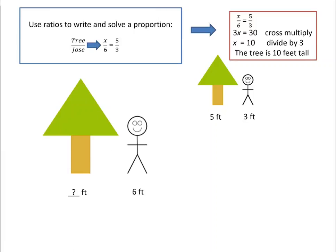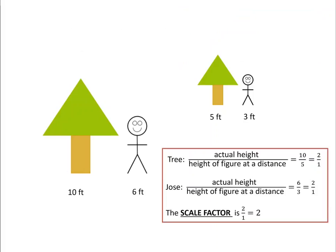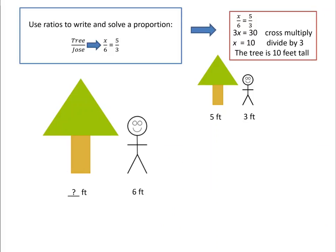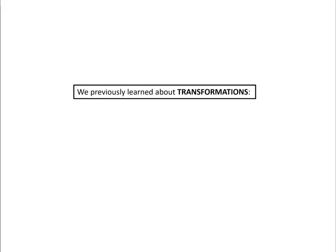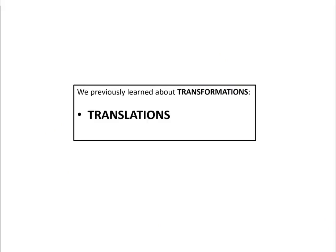If you wanted to set up a proportion, it would be like this: the tree to Jose, x over 6 equals 5 over 3, or you could just also do Jose to the tree. Proportions are really neat because it doesn't matter how you set them up - 3 to 5 or 5 to 3 - but however you set up one ratio is how you set up the second ratio.